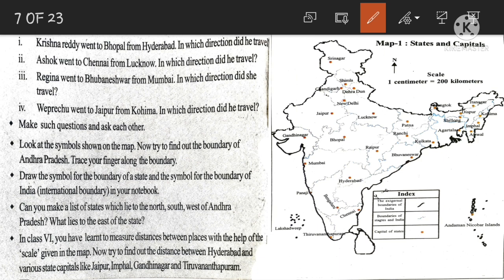Next question: Regina went to Bhubaneswar from Mumbai — in which direction did she travel? Mumbai is the capital city of Maharashtra and Bhubaneswar is the capital city of Odisha. She travelled towards the right side on the map, so it is East direction. Regina travelled towards East.